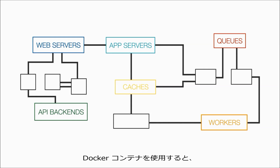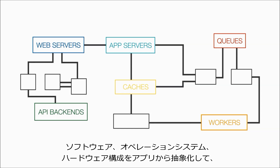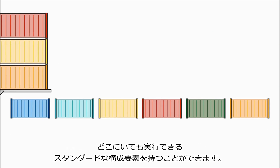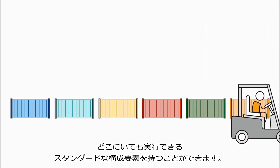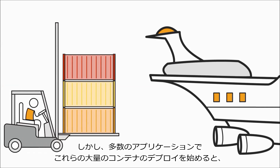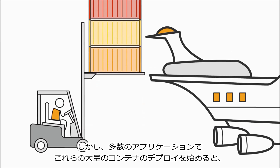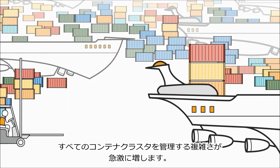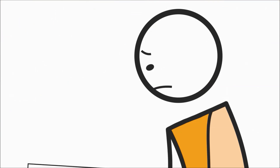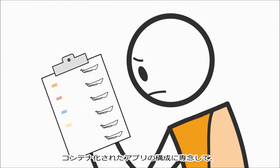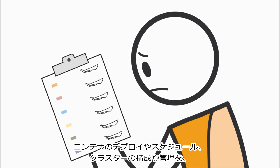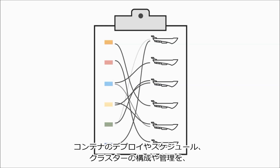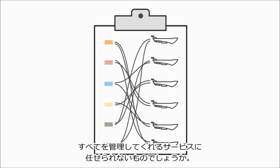Using Docker containers means that you can abstract away the software, operating system, and hardware configuration from your app and have a standard building block that you can run anywhere. But when you start deploying lots of these containers for lots of applications, managing all of these container clusters starts to get complicated pretty fast. Wouldn't it be nice if you could just focus on building containerized apps and leave the container deployment, scheduling, cluster configuration, and management to a service that manages all of this?